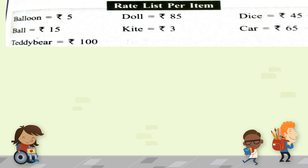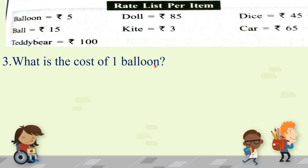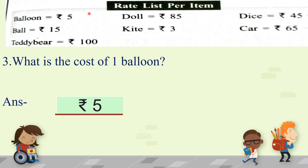Question number 3: what is the cost of one balloon? The cost of one balloon is rupees 5. We use the rate list to find the price of toys from the toy shop. Here we will write rupees 5 as the answer.